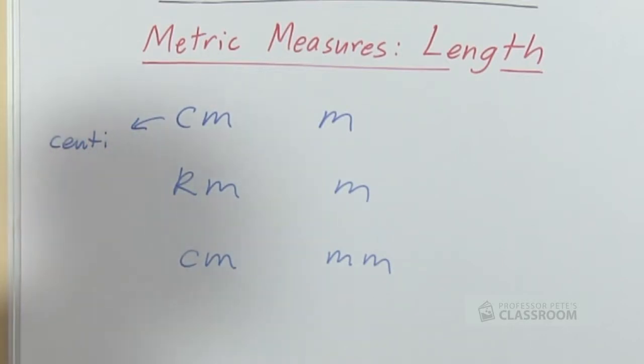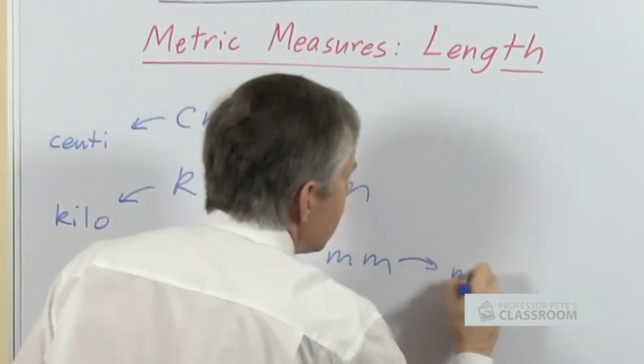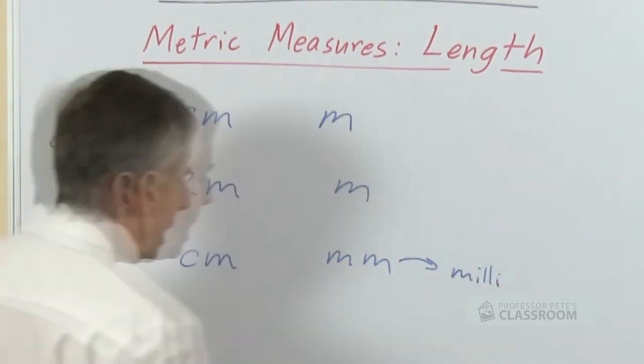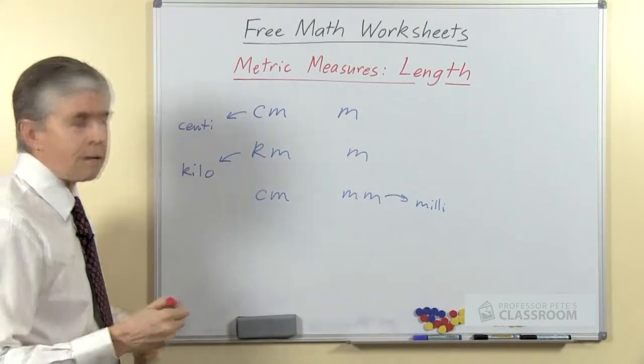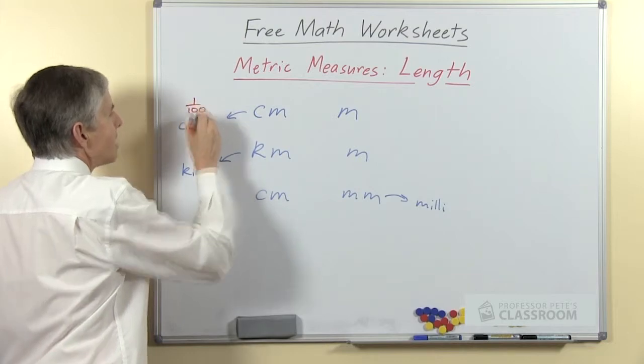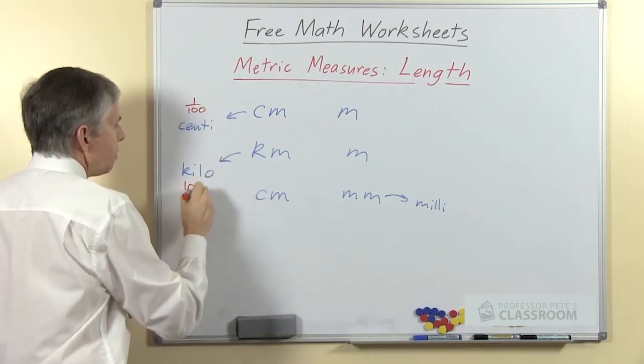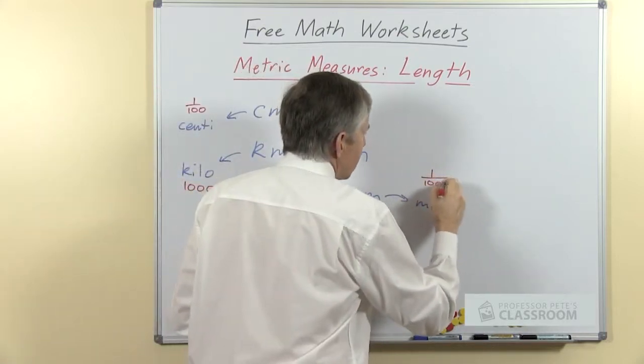The centimeter has a prefix which is spelled the same everywhere, centi in front of the word meter. The kilometer similarly has kilo and the millimeter has the prefix milli. Those prefixes have very precise mathematical meanings: centi means a hundredth, kilo means a thousandth, and milli means a thousandth.